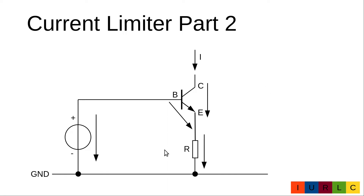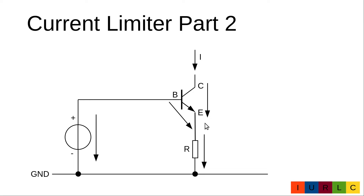As we know from part 1, the current through the resistor is the current of the current limiter. To get a fixed current through the resistor we need a fixed voltage at the resistor. With a constant base-ground voltage and a constant voltage at resistor R, the base-to-emitter voltage must also be constant. Unfortunately, this is not the case — the base-emitter voltage changes with temperature, and I will demonstrate this with measurements.